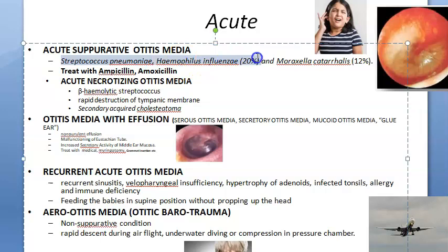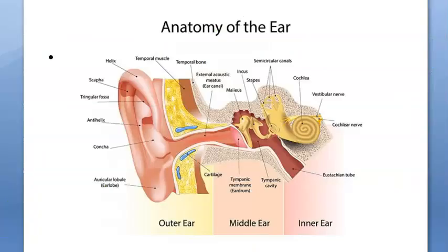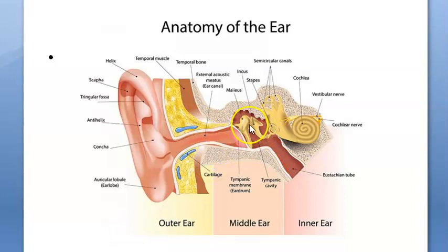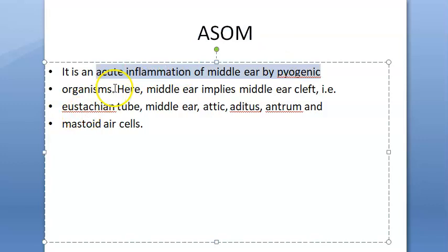ASOM is caused mainly by Streptococcus pneumoniae, Haemophilus influenzae, and Moraxella catarrhalis. Remember these three organisms — they are treated with antibiotics like ampicillin and amoxicillin. ASOM is defined as the acute inflammation of the middle ear by pyogenic organisms.